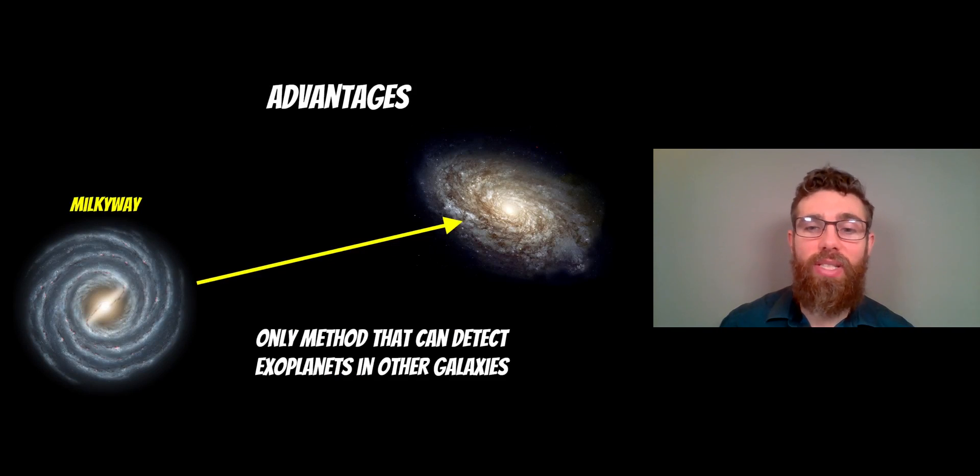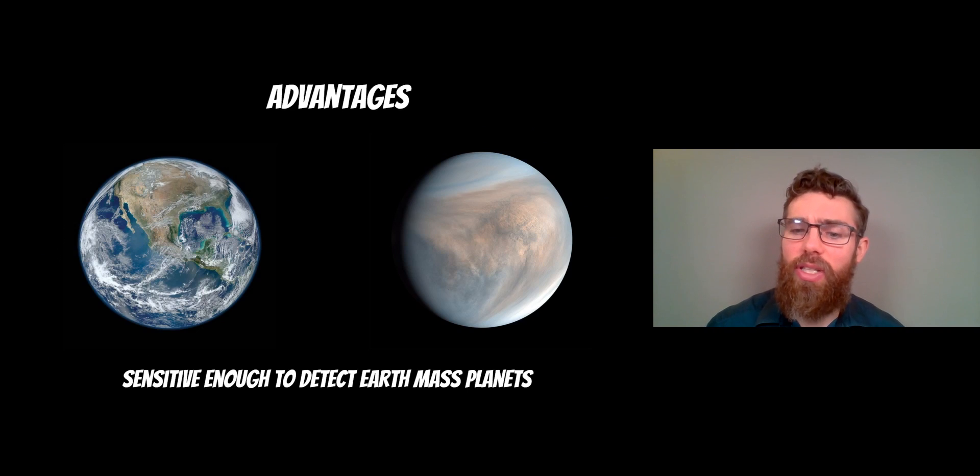Now some advantages to this particular technique is that it's the only method, really, that can detect exoplanets in another galaxy. Normally, the stars have got to be reasonably nearby, so we can measure their light curve or their radial velocity or other methods to detect an exoplanet, because it's a fairly tricky method in the sense that we need very good sensitivity. This method can be used in other galaxies. So we can look at a star in another galaxy, measure it, and it's sensitive enough to detect planets. It's very good for detecting planets a long way away, for finding those most distant planets. It's also sensitive enough to detect Earth mass planets, so it's one of the methods that's actually quite good for detecting planets the size of the Earth.